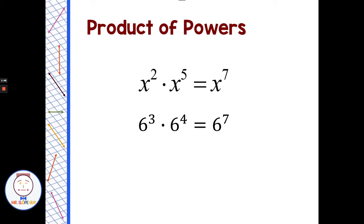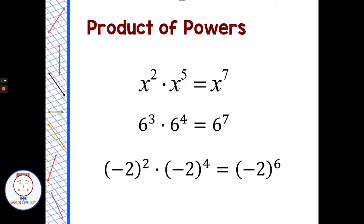So 6 to the third times 6 to the fourth is 6 to the seventh. Negative 2 squared times negative 2 to the fourth power — we're multiplying and have the same base, negative 2, so we add the exponents: 2 plus 4 to get negative 2 to the sixth. Notice how in all these cases the base didn't change. A lot of people get confused with a negative base and think the rule has changed. It hasn't. If you're multiplying and have the same base, just add the exponents.